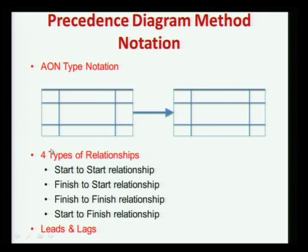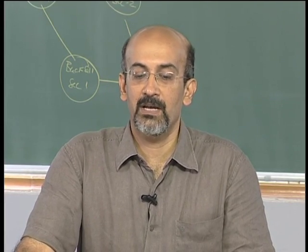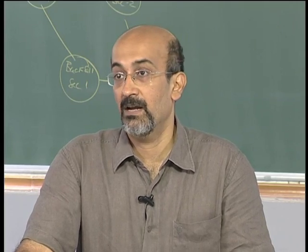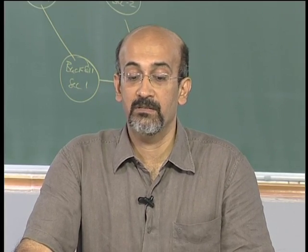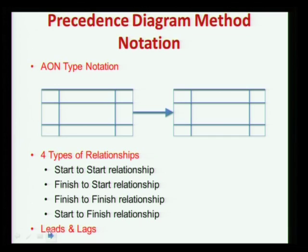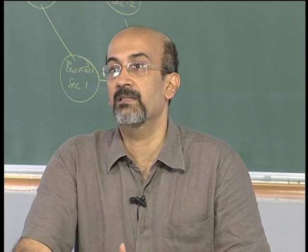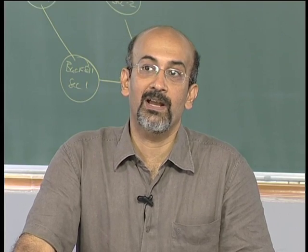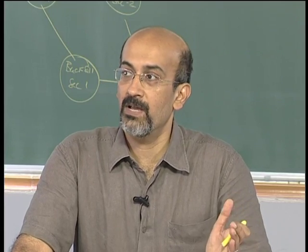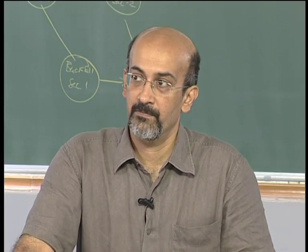More interestingly, PDM represents various types of relationships. So far we have only been using a finish-to-start relationship. PDM also uses three other kinds: start-to-start, finish-to-finish, and start-to-finish. In addition to this, each relationship can be qualified with a lead or lag. For example, in a finish-to-start relationship with a two-day lag, the next activity will start two days after the first finishes. Similarly, a start-to-start with a two-day lag means the following activity can start two days after the first activity starts.